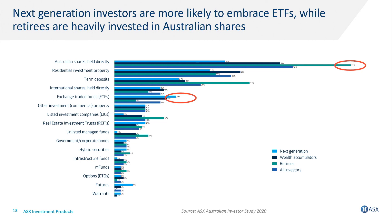The last trend I'd like to share is the adoption by next generation investors. Last year ASX produced a research document called the ASX Australian Investor Study. It's no surprise to see retirees featuring as the most common user of Australian shares held directly, but what is really exciting is next generation investors' adoption of ETFs. In fact, findings from the US show that an ETF is more likely to be the first investment made by a next generation investor than holding shares directly.